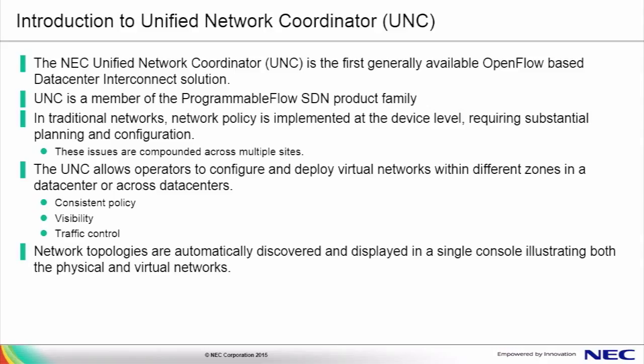This enables a number of things. First, consistent security policy — when there's only a single pane of glass to deploy a new change, we no longer have to go device-by-device. Secondly, it enables better visibility into traffic patterns, so rather than running a command on every device, we can get all that information from the UNC console. Thirdly, we have better traffic control — having the UNC as a central point, we no longer need complex protocols and obscure CLI commands. Also, network topologies are automatically discovered and displayed in a single place, covering both the physical and virtual networks.